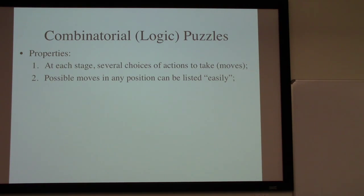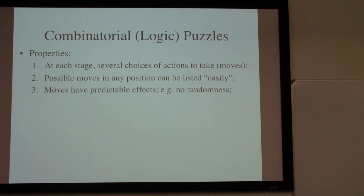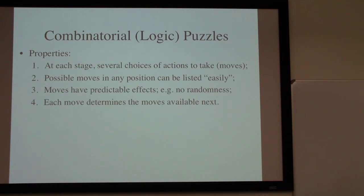We're interested primarily in puzzles in which we can just look at a position and essentially write down a list of all the legal moves. A third characteristic is that the moves we make have some predictable effect — we can think through what the result of making a move will be. That rules out randomness, because before we make a move, we should be able to calculate what's going to happen. Finally, each move determines what moves will become available at the next stage, and logical thinking allows us to work out a couple of moves ahead.